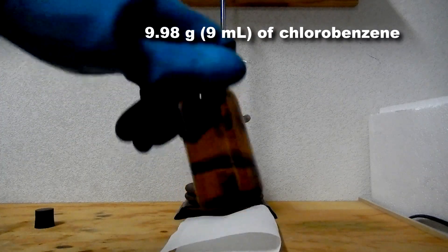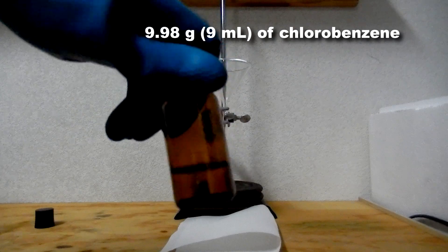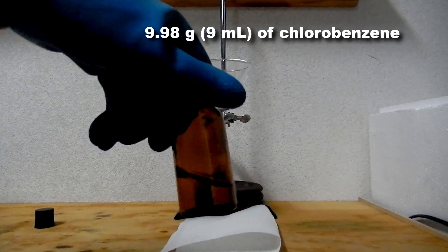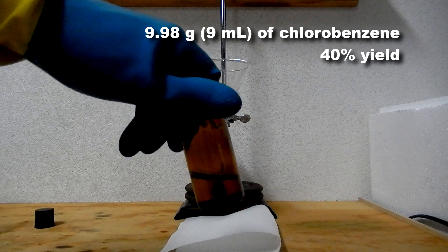Here is the final product. 9.98 grams, roughly 9 milliliters, of pure chlorobenzene were collected. This corresponds to a 40% yield based on aniline.